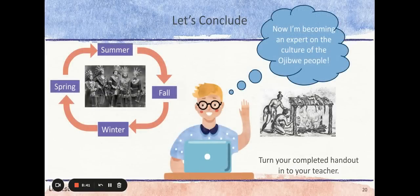You have learned about the Ojibwe people and how they use the resources of the land to meet their needs. As you engage in the ELA guidebooks unit, The Birchbark House, you will use this information as you take a closer look at the life the Ojibwe lived throughout each season. When you finish this video, be sure to turn in your completed handout to your teacher.